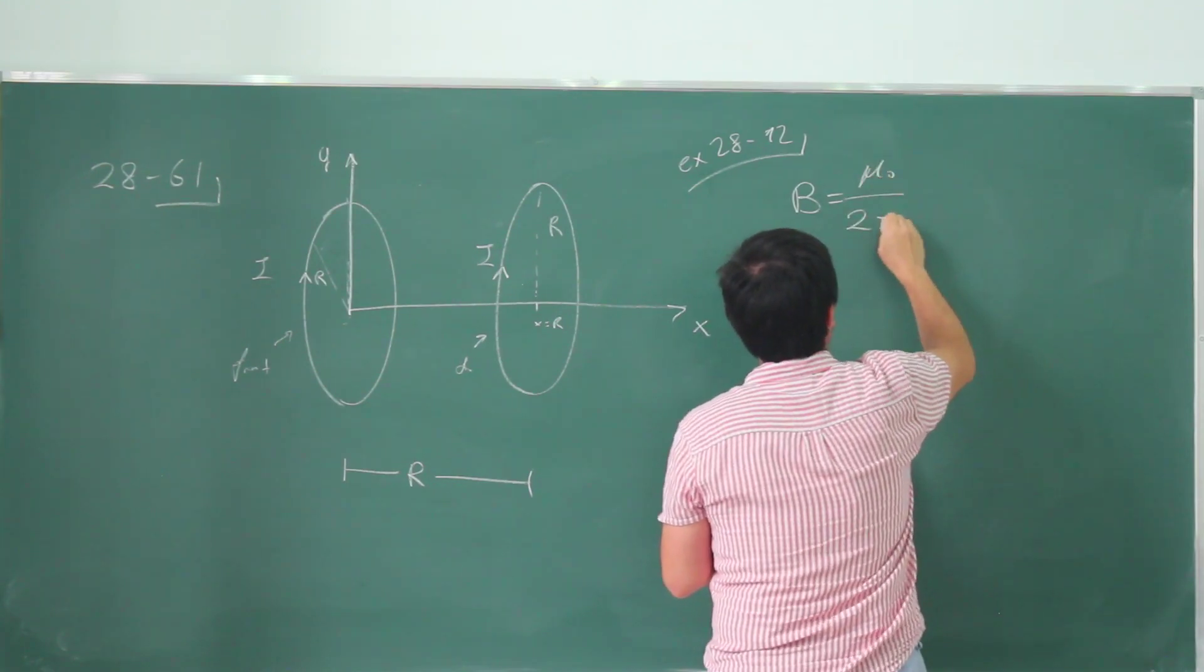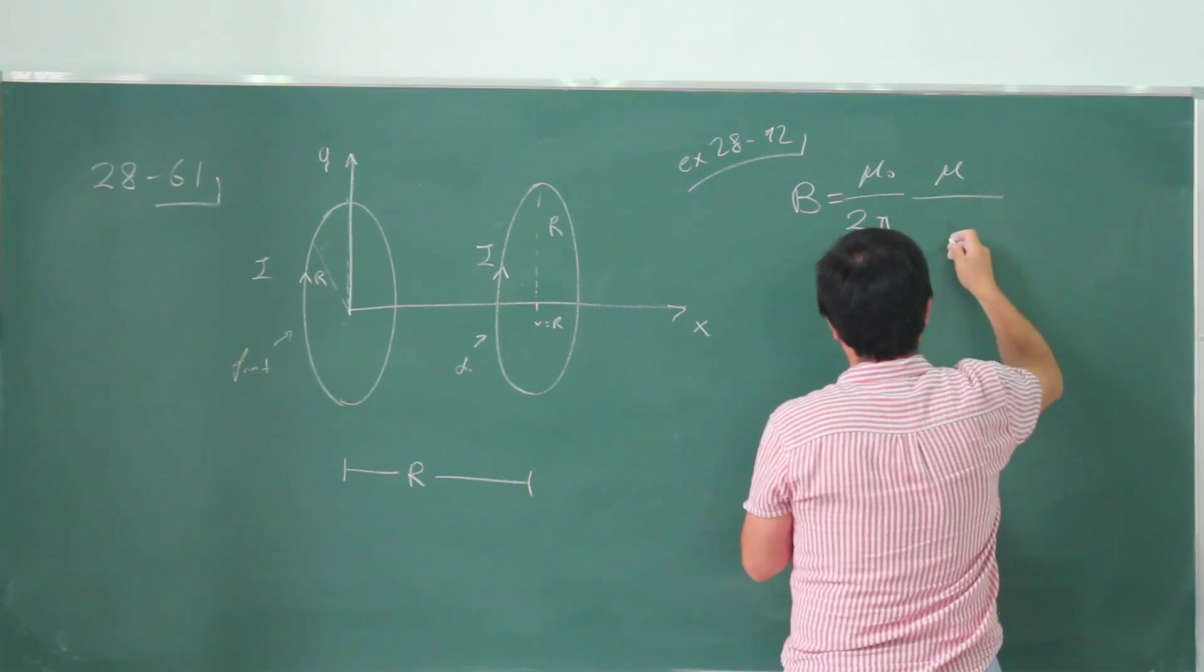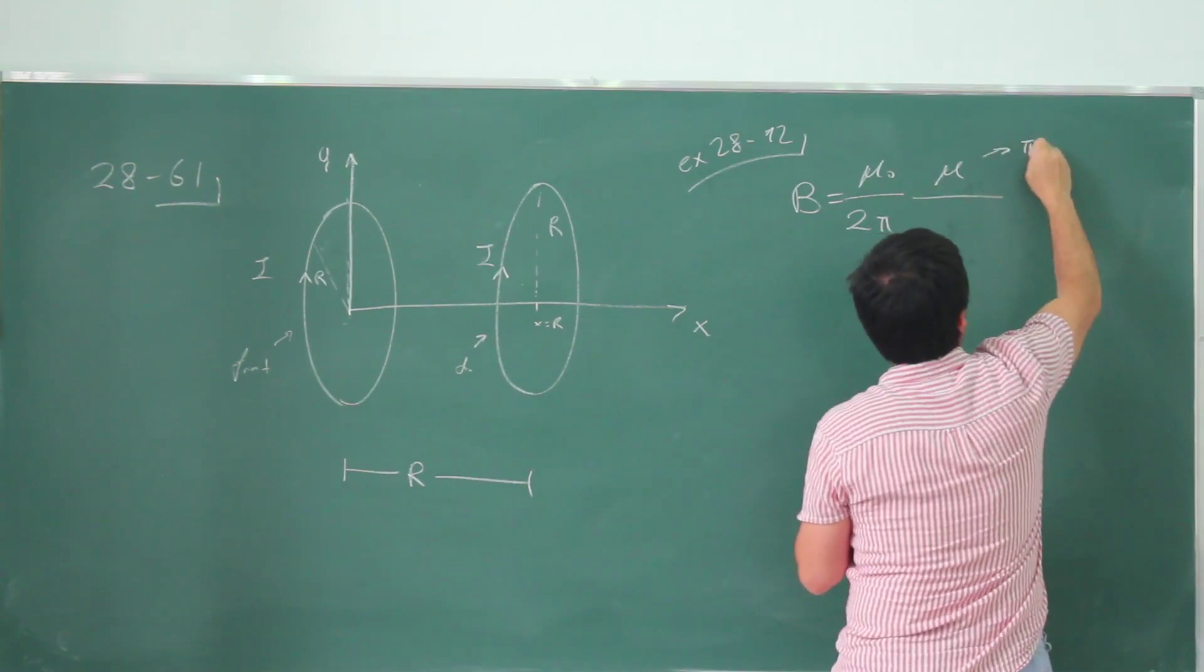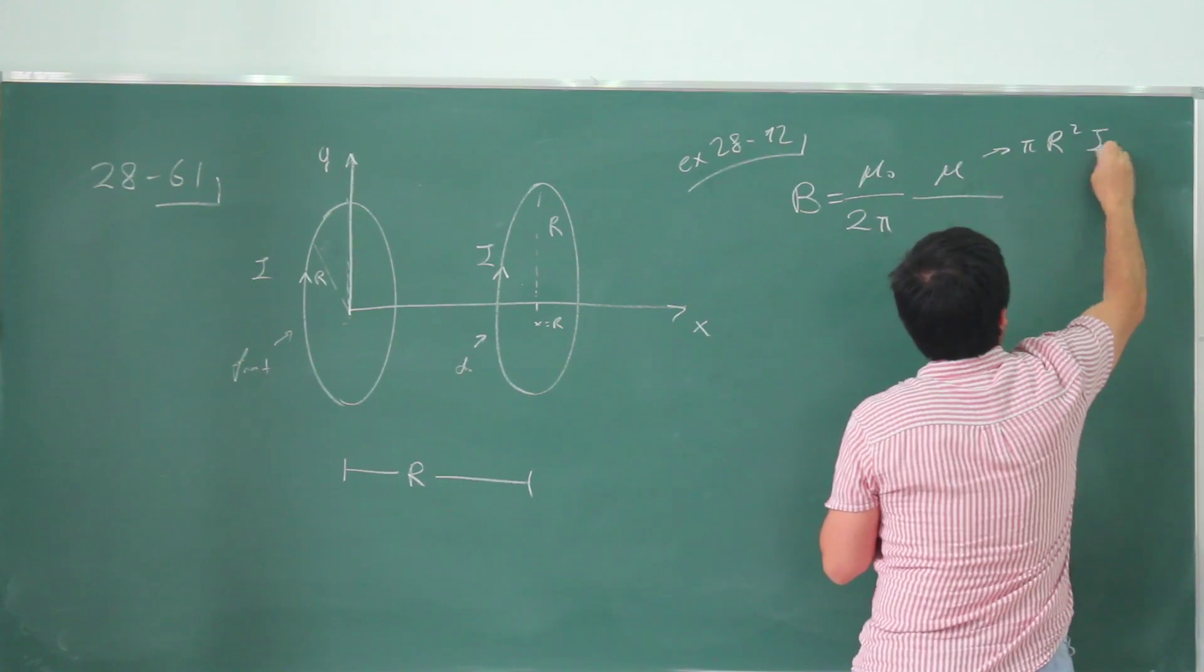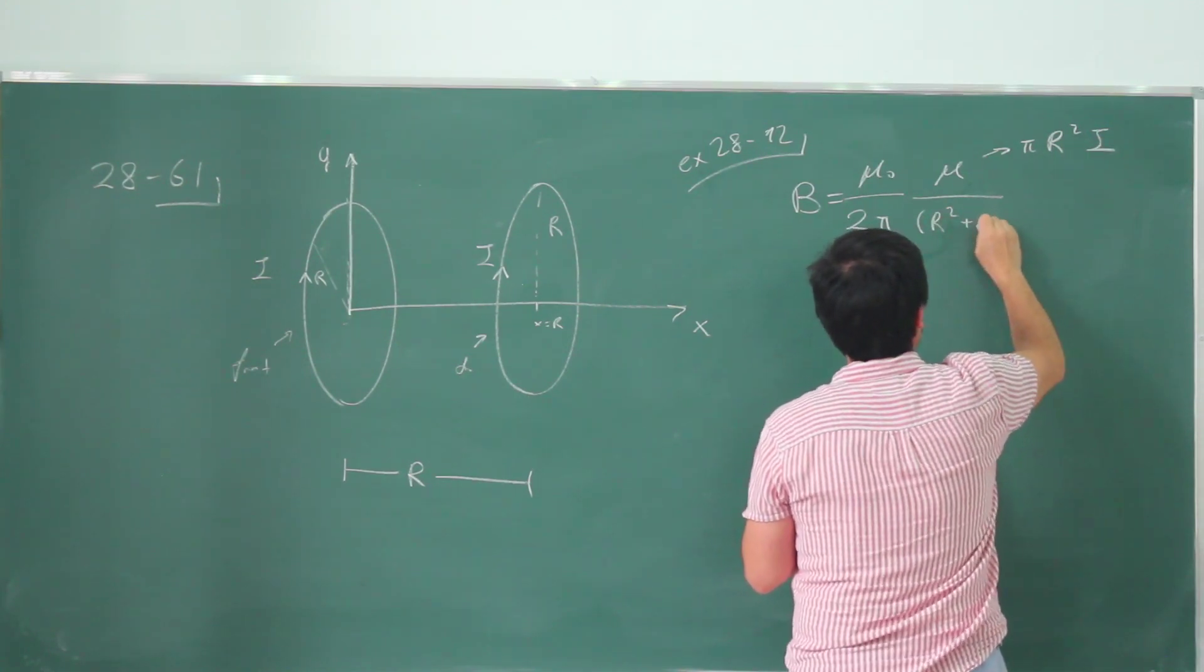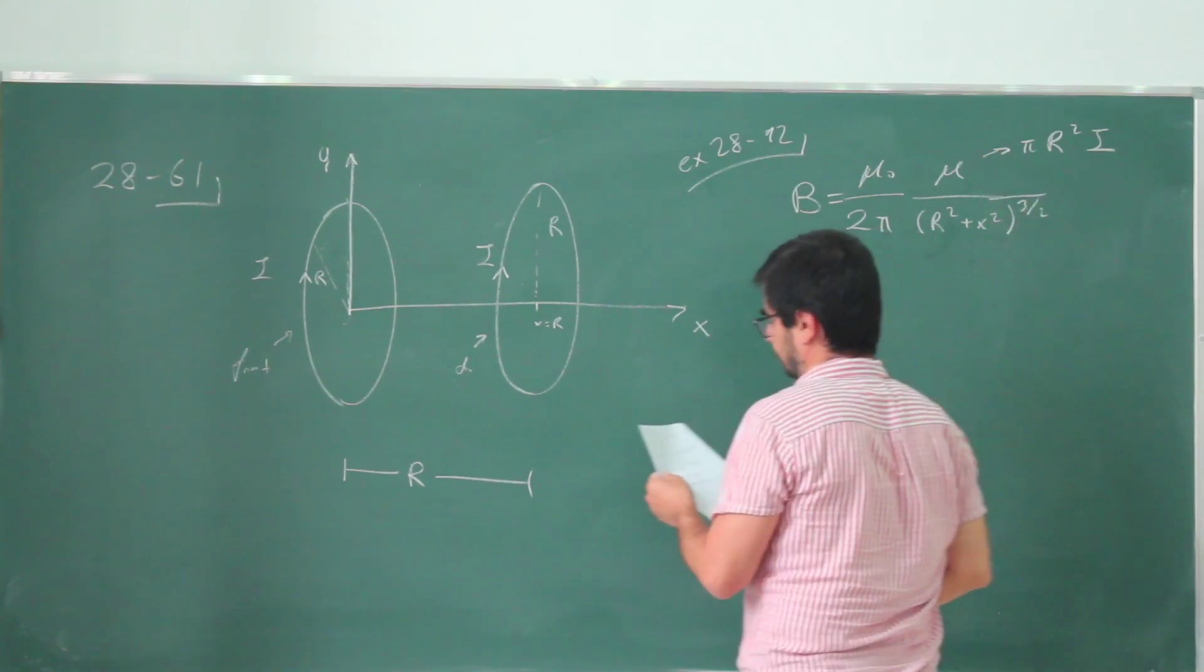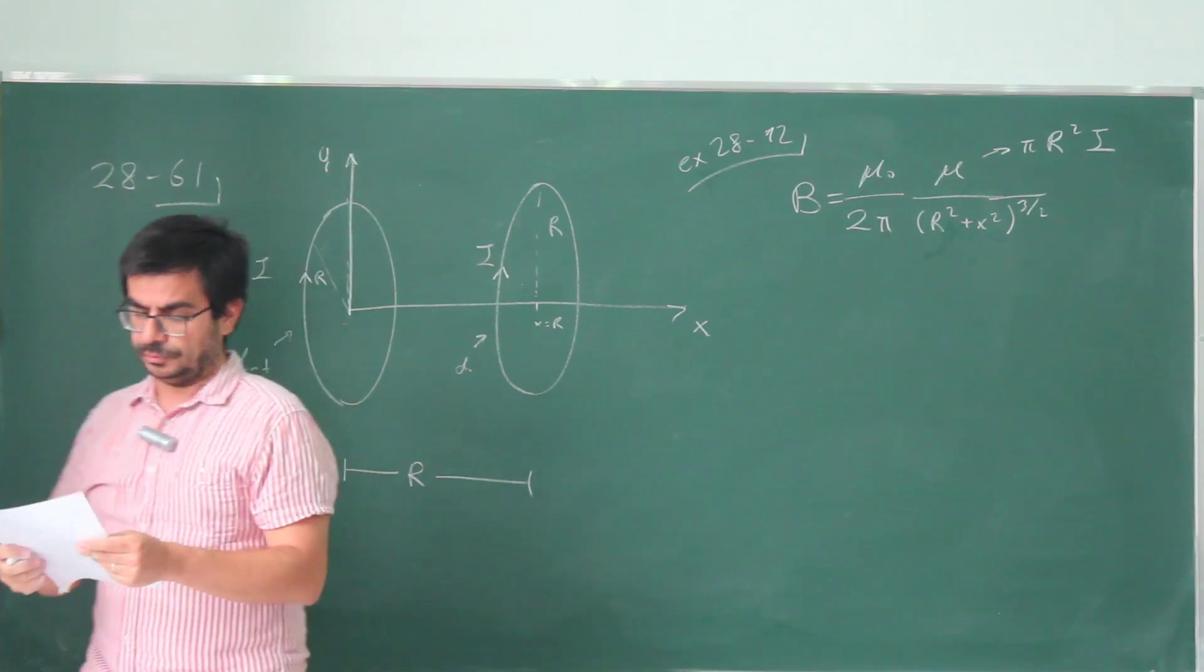And the result was mu naught over 2 pi times the magnetic dipole, which is of course pi R squared times i, but it's not very important, R squared plus x squared to 3 halves. This is something we already found.